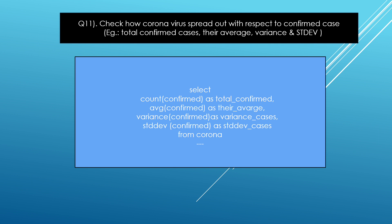The next question is: check how coronavirus spread with respect to confirmed cases — for example total confirmed cases, their average, variance, and STD. Basically I used COUNT(confirmed) as total_confirmed, AVG(confirmed), VAR(confirmed), and STD(confirmed) from corona. This is very simple.